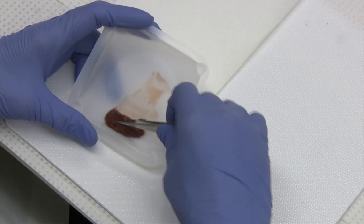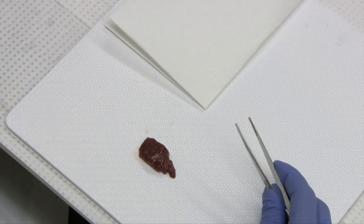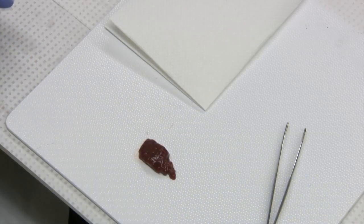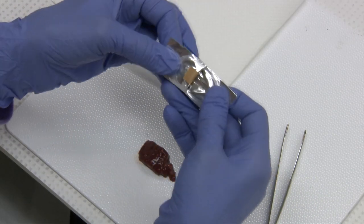So the first step we're going to do is to create a fresh cut on this tissue. I will take a scalpel blade and cut this tissue in about half.